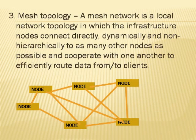Mesh topology: a network topology in which nodes are connected to many other nodes in random fashion is known as mesh topology. Mesh topology is highly reliable because if one link is down, transmission is possible through other links.